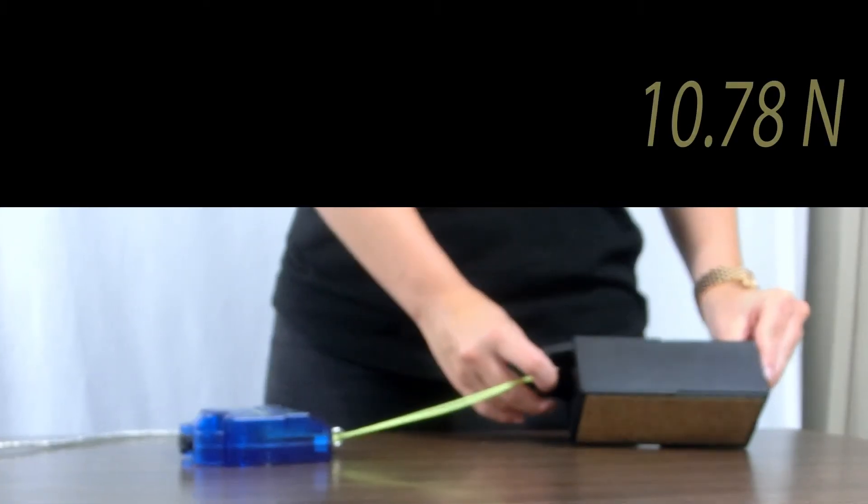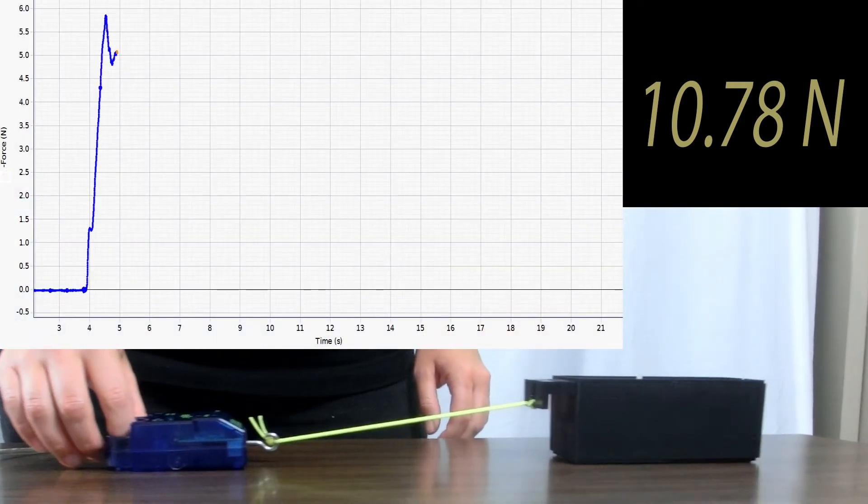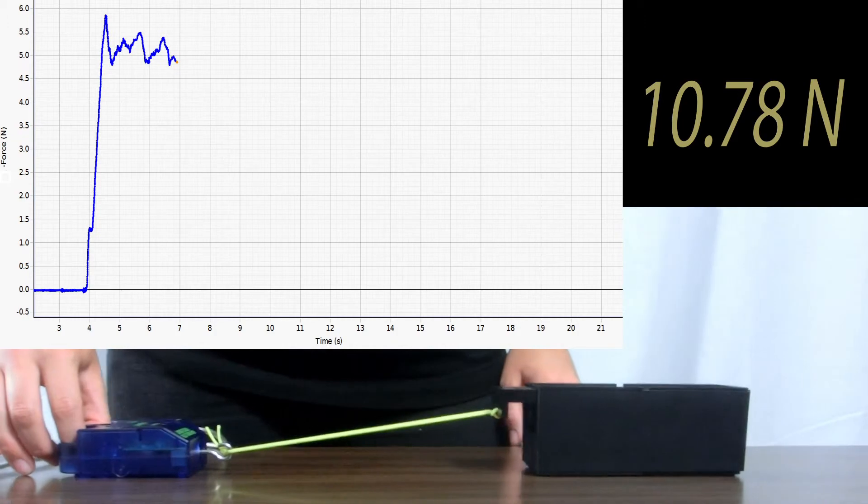Here we have our cork surface cart. The total weight of the cart is 10.78 newtons. As we pull it, we can see the amount of force generated on the graph below.